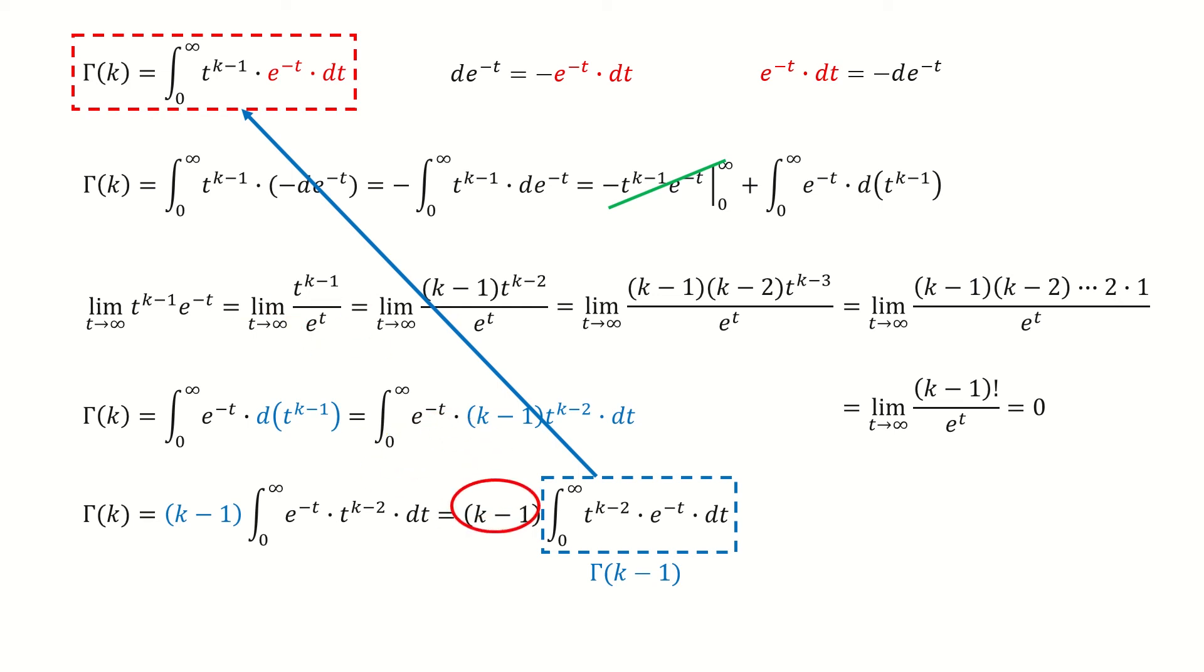And don't forget the coefficient in front of this integral. So we get an important relation between gamma k and gamma k minus 1.